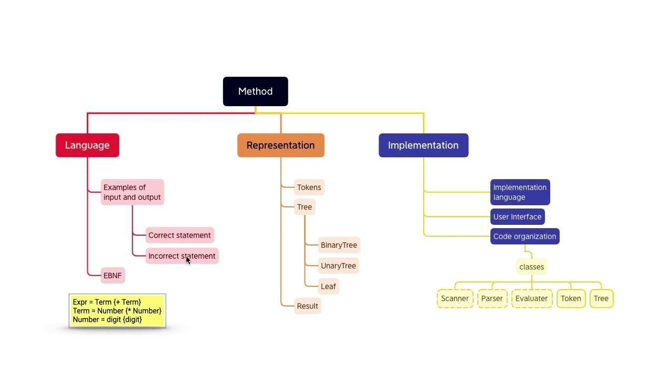For instance, for our Pico language, the BNF would look something like this. Now we have to decide the representation of our elements. For our tokens, we will use an object with two properties: a type and a value. A binary tree will be represented as an object with three properties: a head, the left subtree, and the right subtree. A unary tree will be represented as an object with two properties: a head and a subtree. And for a leaf tree, it is enough to just have a property called head. Now the result in the Pico language will be a stream.